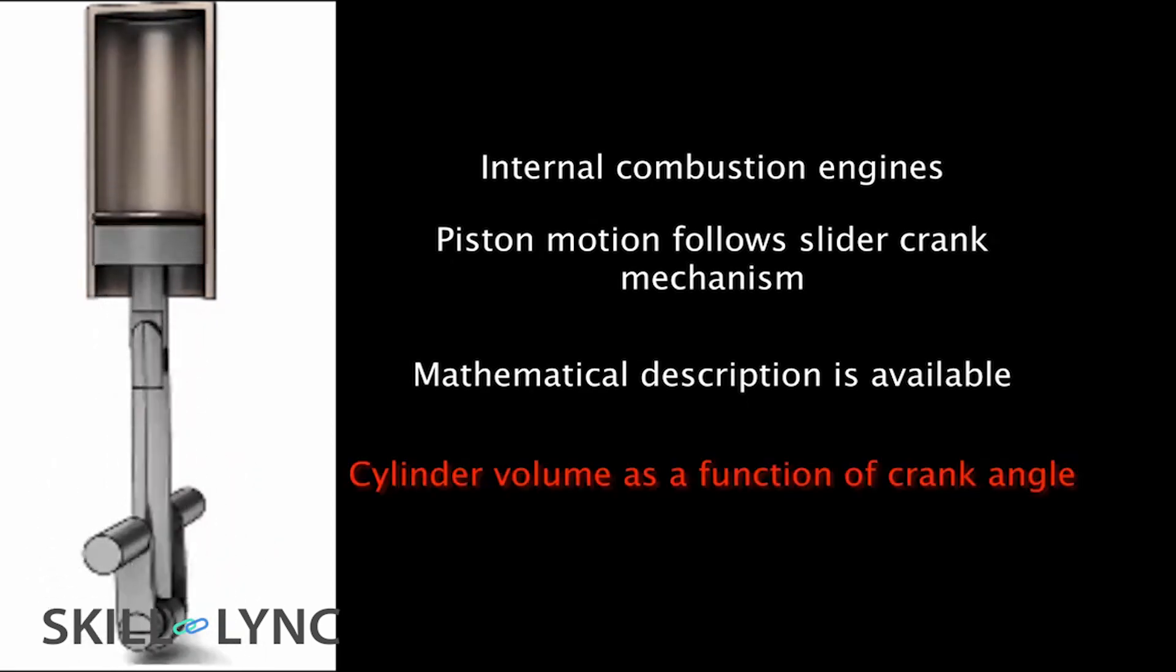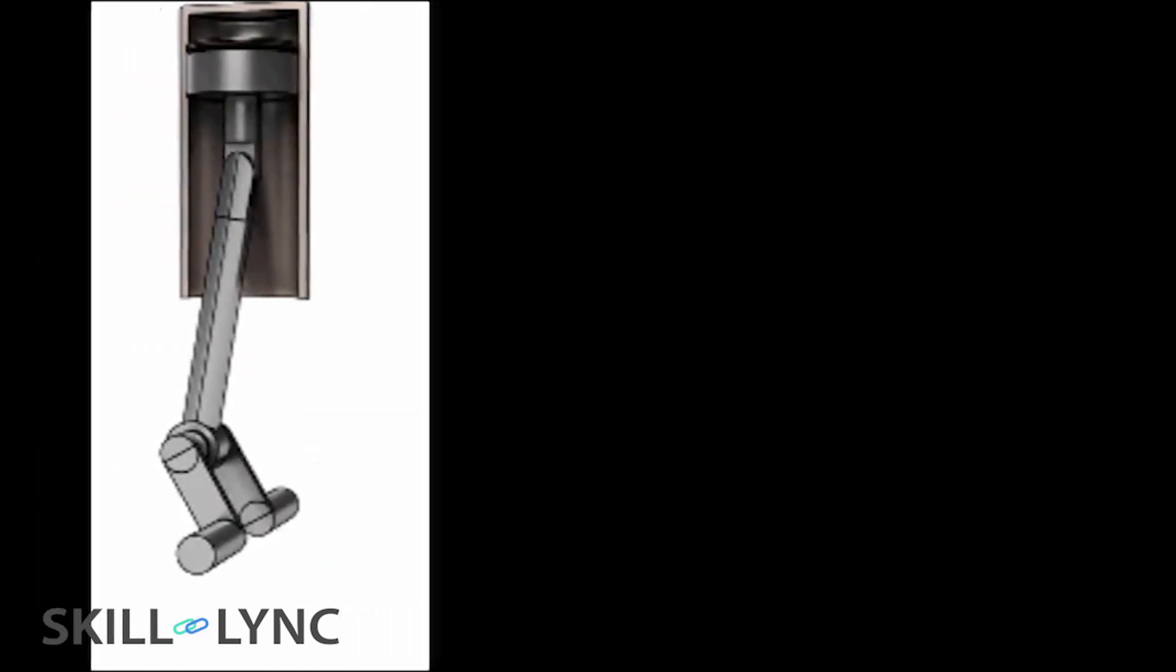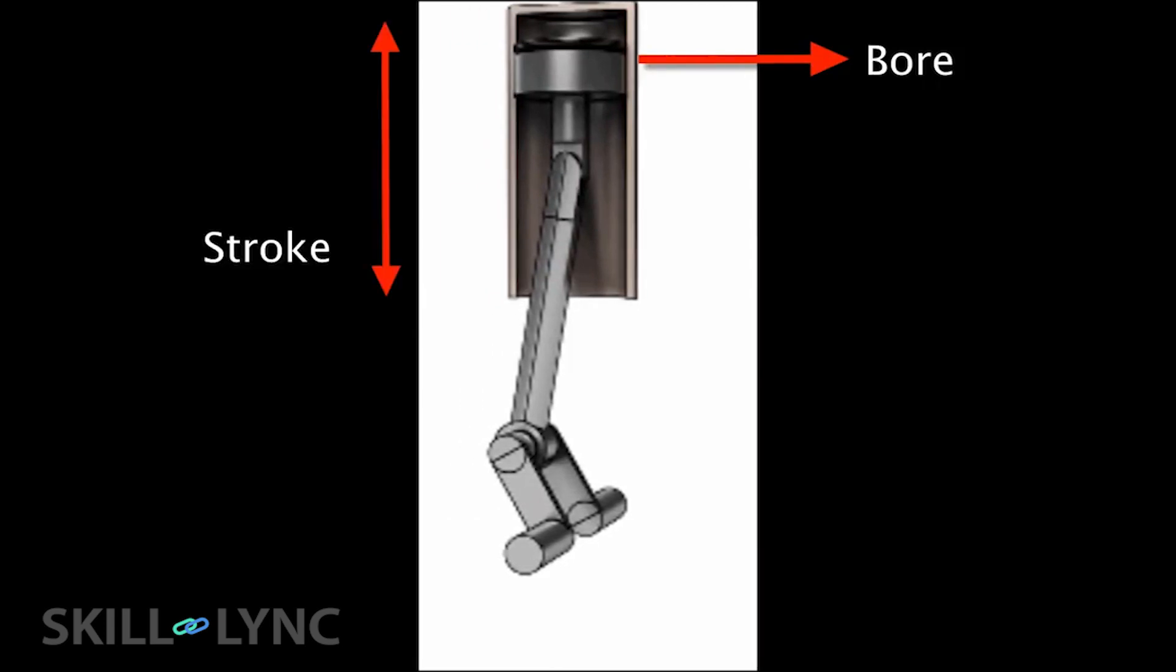For a given set of geometric parameters, we are going to calculate the volume of the combustion chamber. The geometric parameters are the bore, the stroke, the connecting rod length, and the compression ratio.